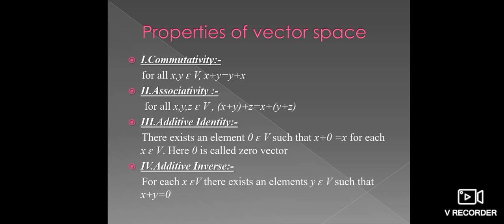Next, additive identity. Here, there exists an element 0 belongs to V such that X plus 0, which is equal to X. Here X belongs to the vector space V and also 0 is called zero vector.